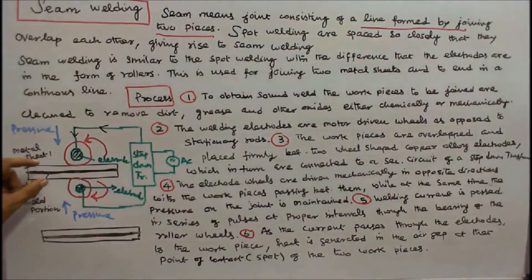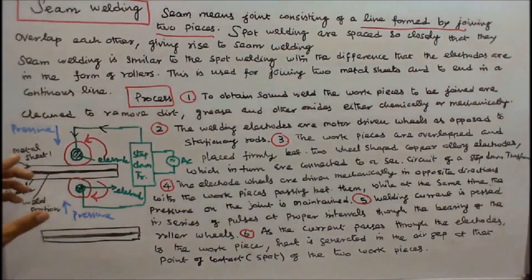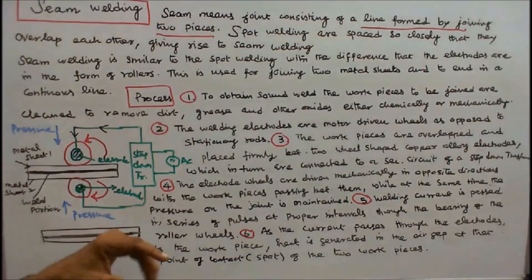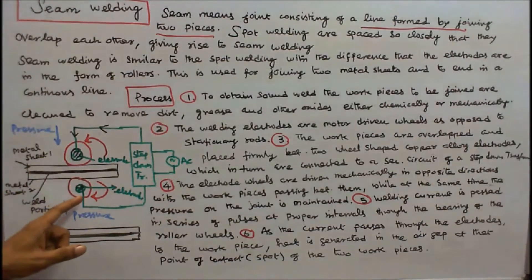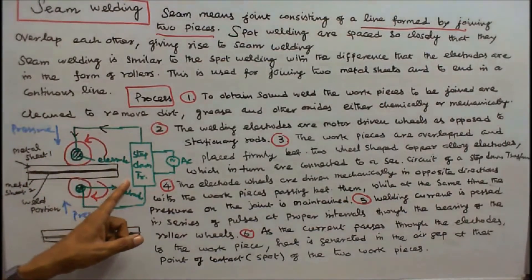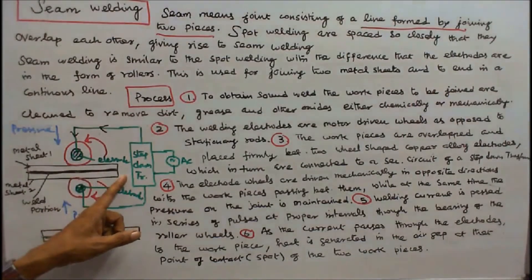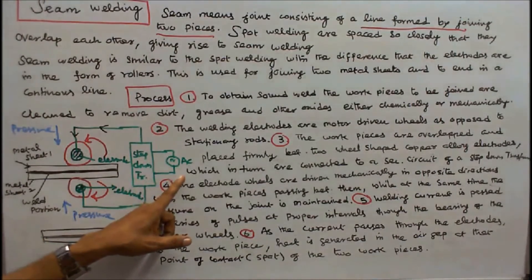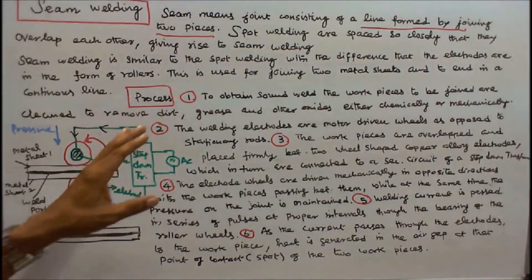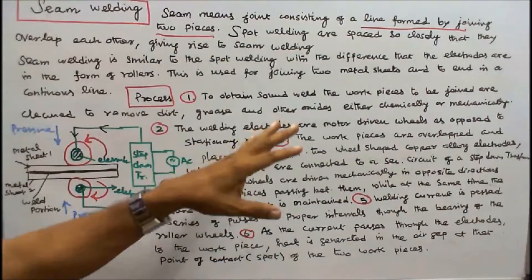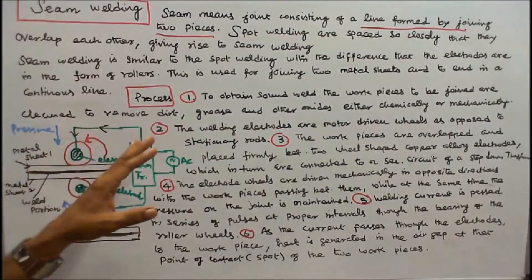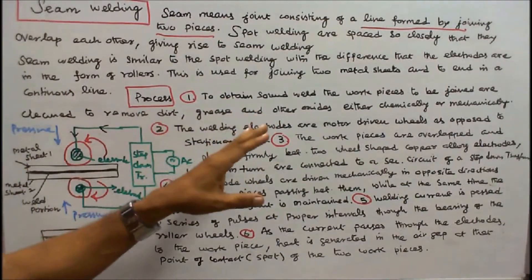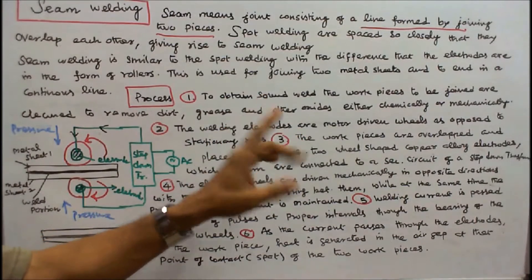The workpieces are overlapped and placed in between the rollers. One roller rotates in a clockwise direction and another in an anticlockwise direction. These two are the electrodes, connected to a step-down transformer to get high current and low voltage, energized by an AC source. Number 1: To obtain a sound weld, the workpieces to be joined are cleaned to remove dirt, grease, and other oxides, either chemically or mechanically.